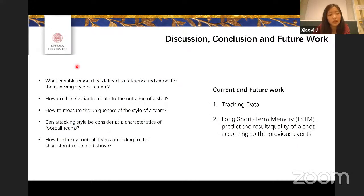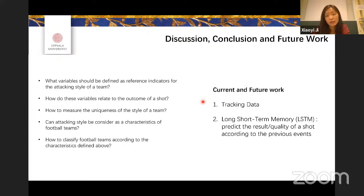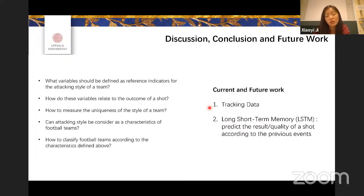With all these experiments, I have answered the questions I raised at the beginning. Our conclusion is that attacking style cannot be considered a characteristic for football teams, and all attacking styles in Allsvenskan are quite similar to each other. There also exist other playing style characteristics, such as pass patterns, to discover in the future. One future improvement would be using tracking data, which has more information about what happens in a match compared to the data I'm using now.